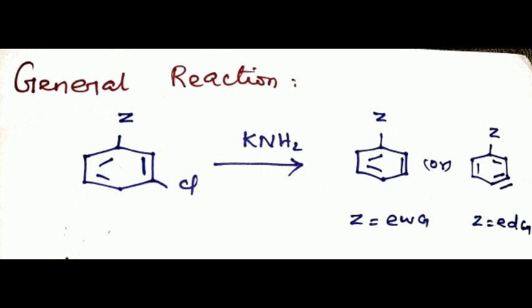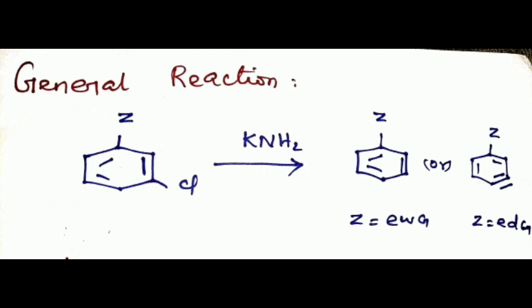If Z is an electron donating group, the para position hydrogen is removed. After removal, we get benzyne. The nucleophile then attacks, and we get the product. Now we will discuss some more examples.